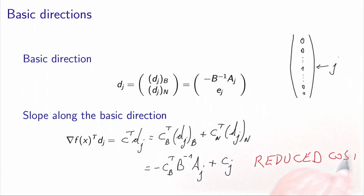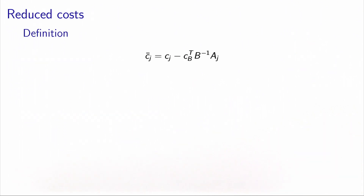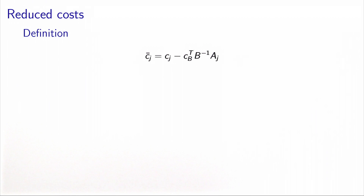The reduced cost is the quantity we just calculated. For non-basic variables, it represents the slope of the objective function along the corresponding basic direction. This is how we have derived the quantity.